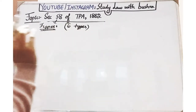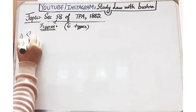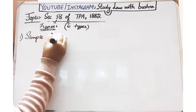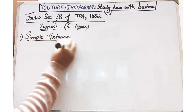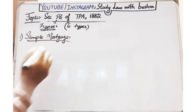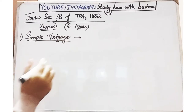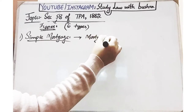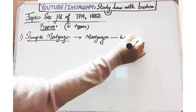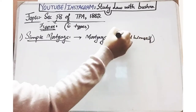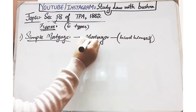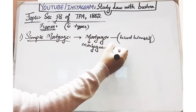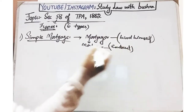Basically there are six types of mortgage under Section 58. We will discuss them one by one. First of all we have simple mortgage. Simple mortgage — the name is very simple. Where a person without delivering the possession of property takes the loan from another person. If there is no possession transfer, that is simple mortgage. Here the mortgagor binds himself for the liability of the loan — the personal liability is on the mortgagor.